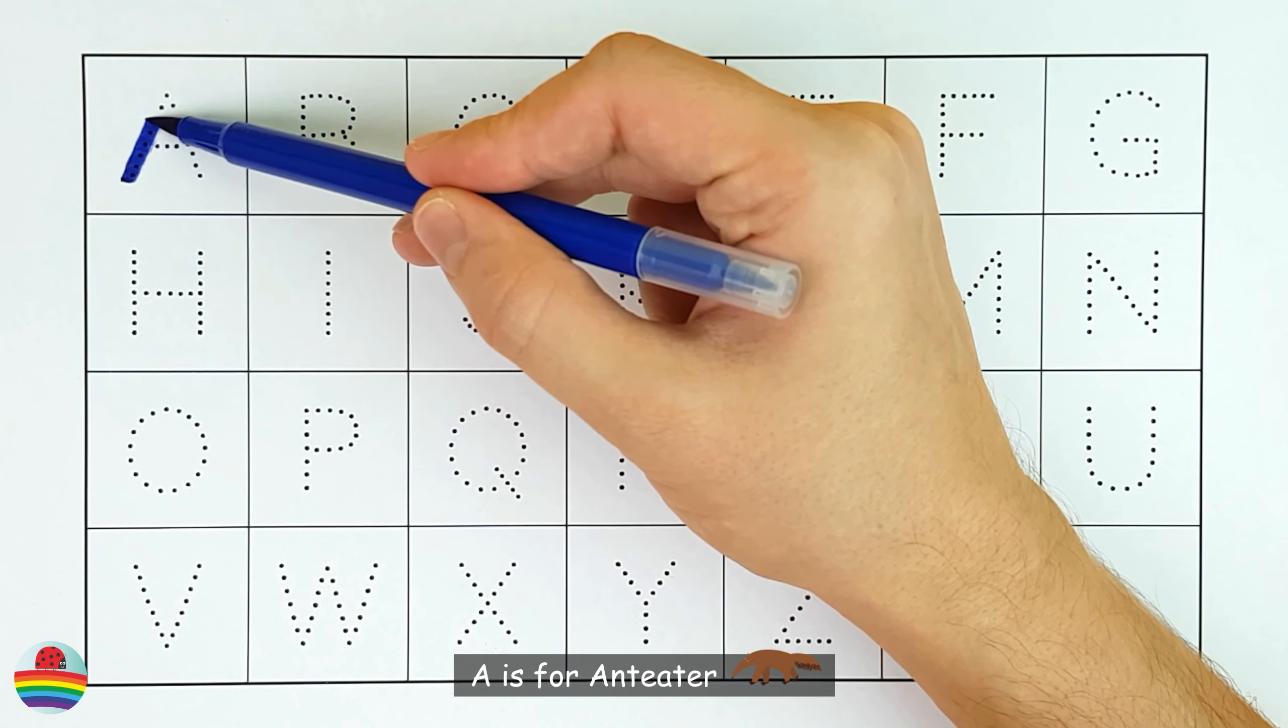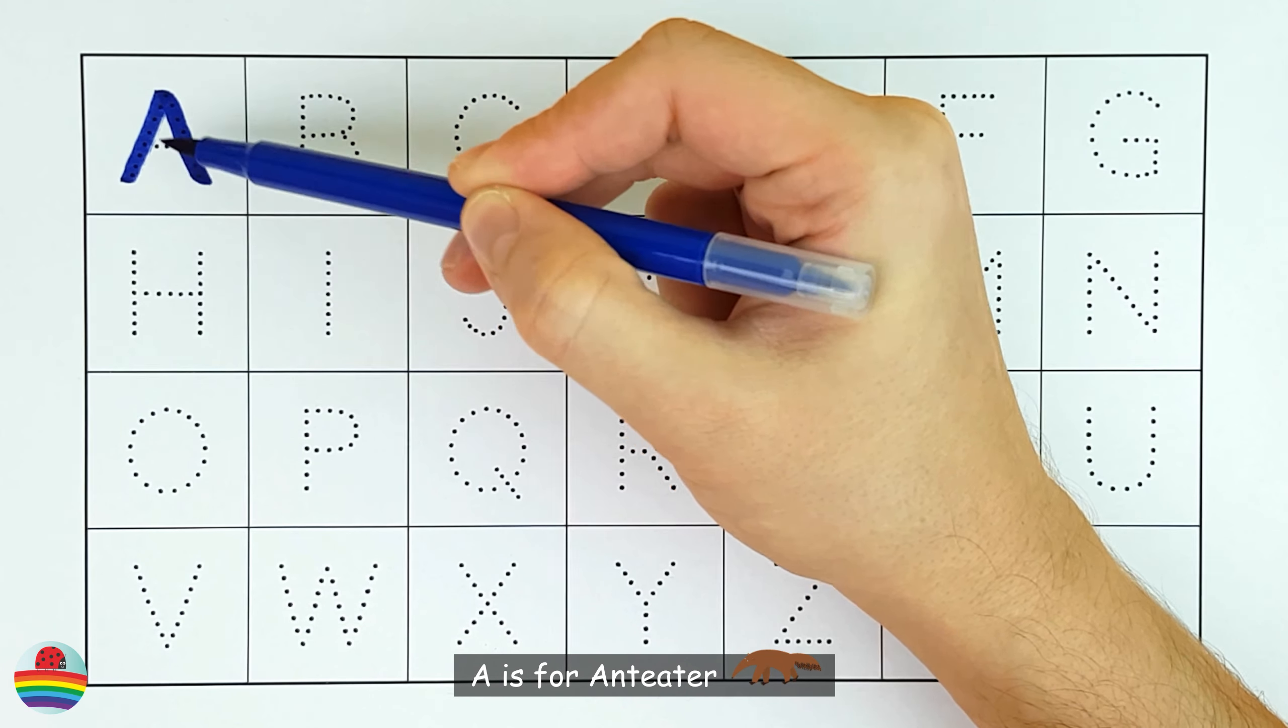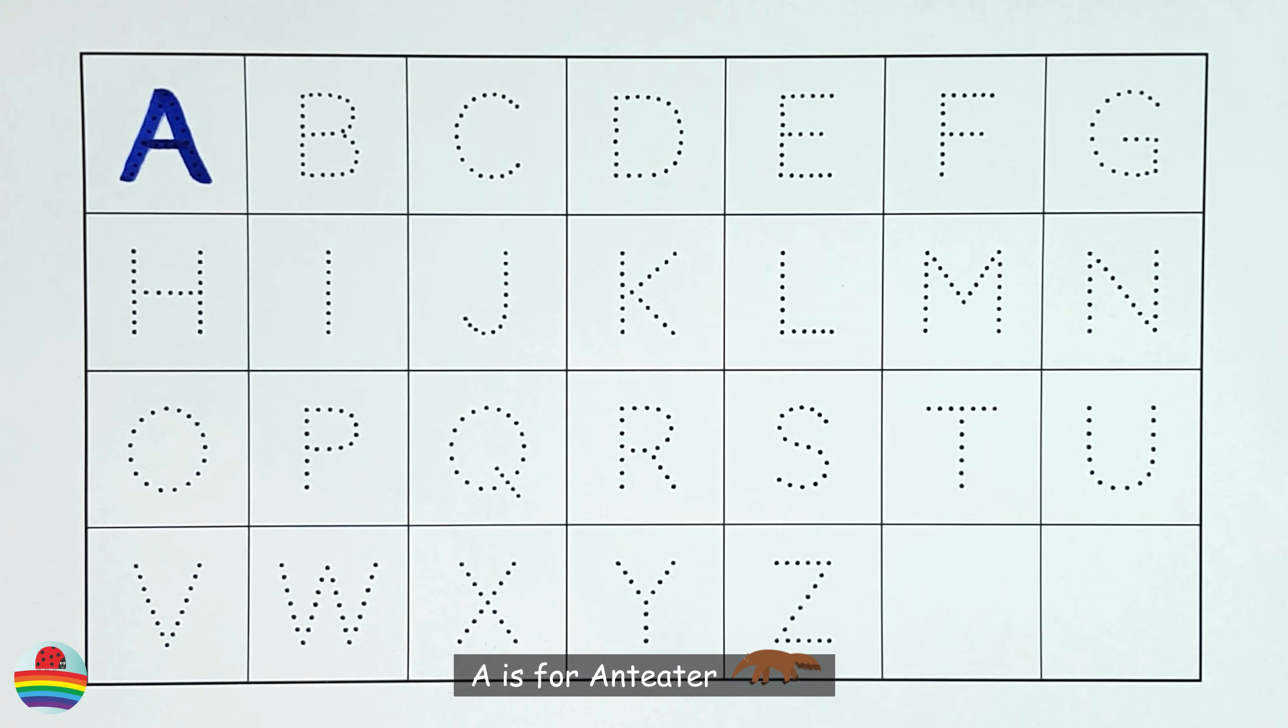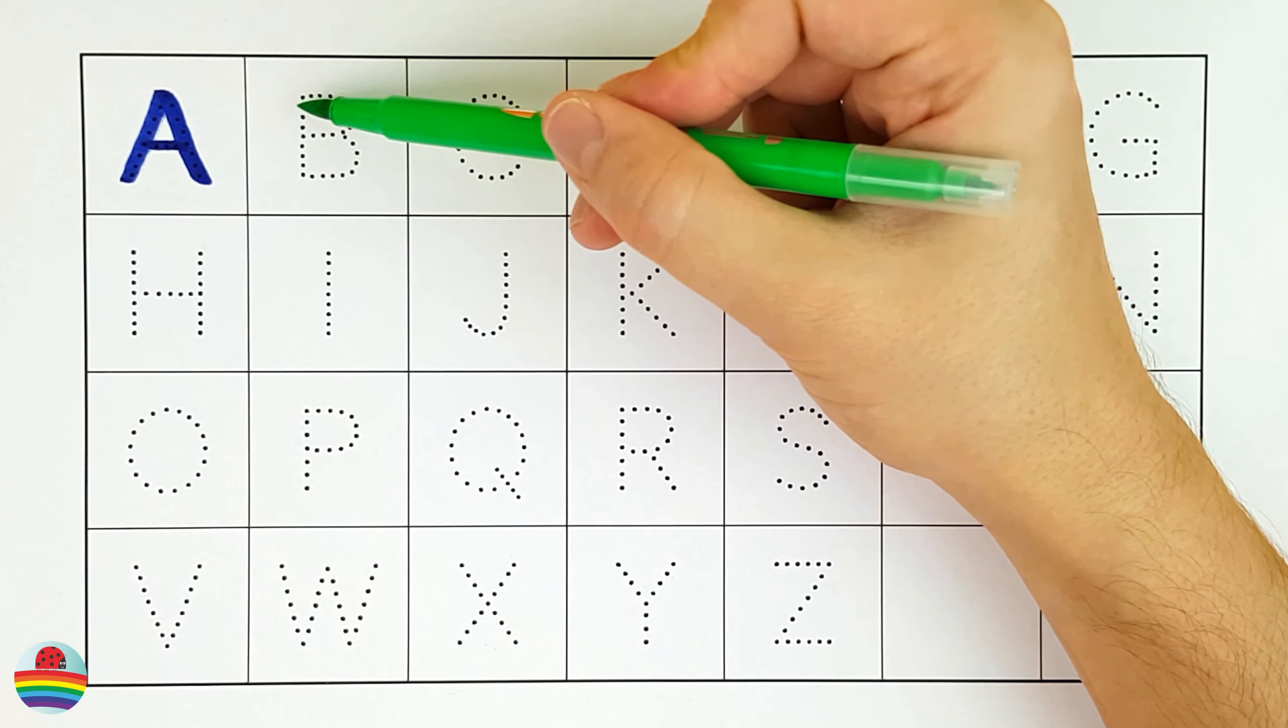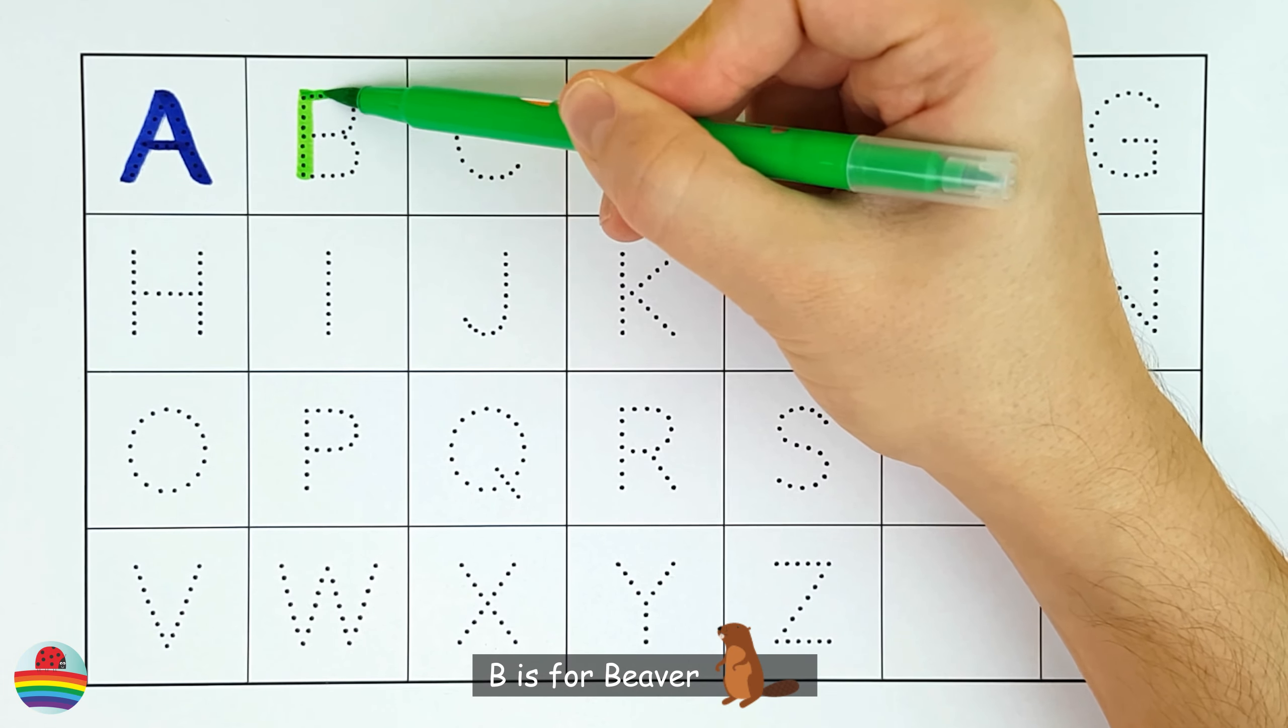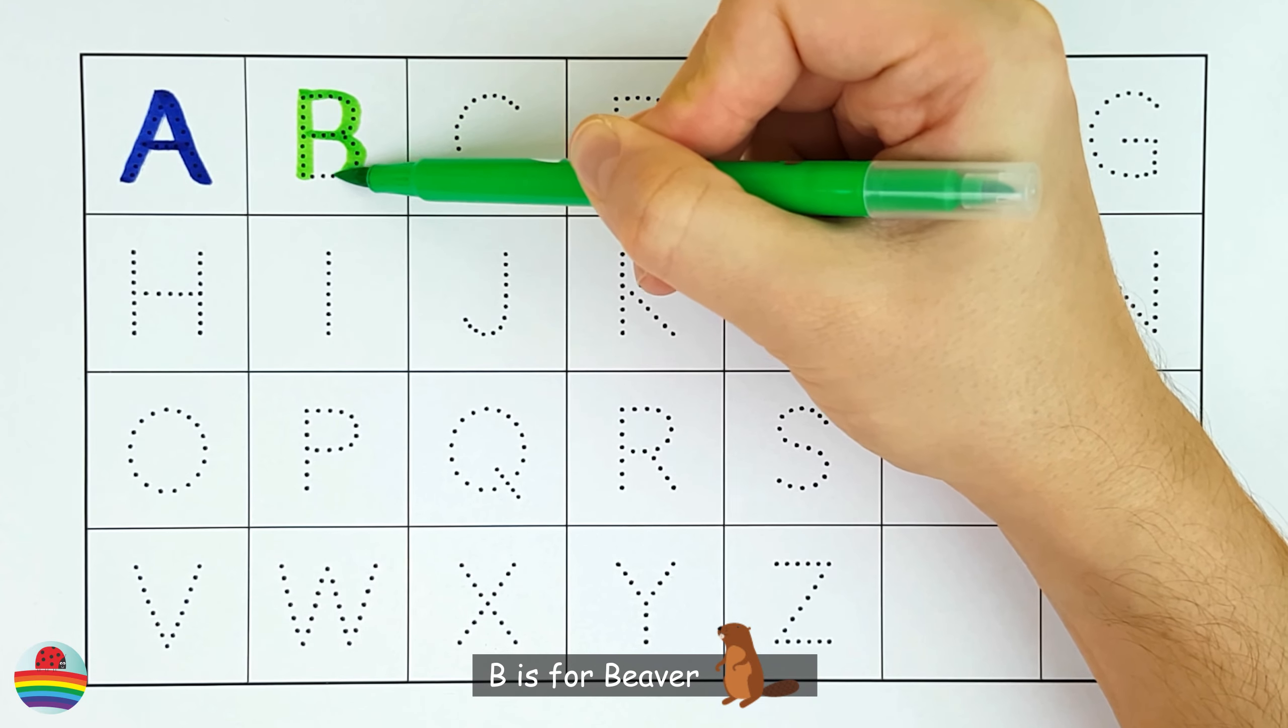A. A is for anteater. A. B. B is for beaver. B.